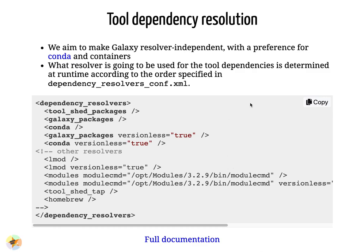At runtime, Galaxy looks for installed dependencies in an order determined by the dependency_resolvers_conf.xml file. The file shown is similar to what is used on Galaxy Australia. Given a set of requirements, Galaxy first looks for an installed tool shed package, then a Galaxy package with the required version, then a conda package with the required version, then a Galaxy package of any version, and finally a conda package of any version. Typically on Galaxy Australia, the packages used to run tools are Bioconda packages.